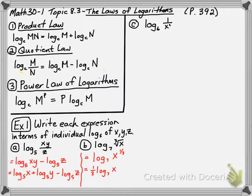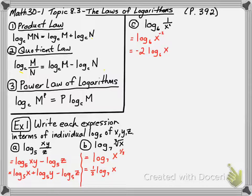In C, log base 6 of 1 over x squared is going to be log base 6 of x to the power of negative 2. So that will be negative 2 times log base 6 of x.